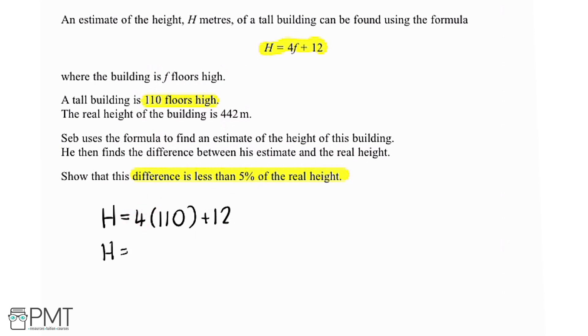So h is 4 multiplied by 110 plus 12. Popping all of this into the calculator, we get 452. So this would have been Seb's estimate.